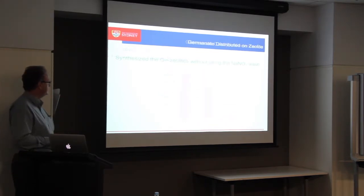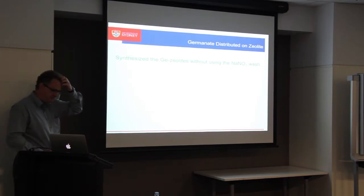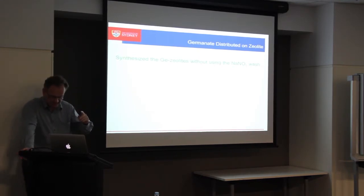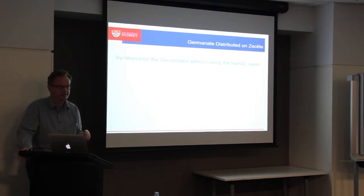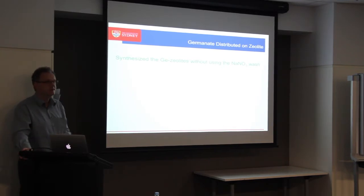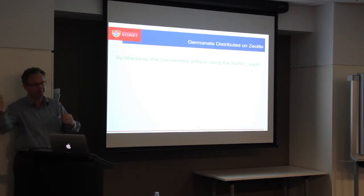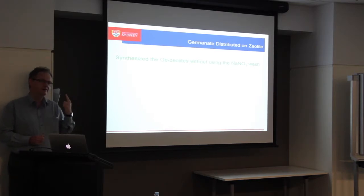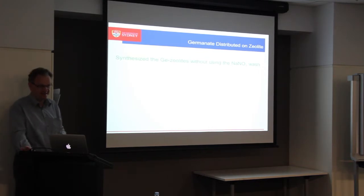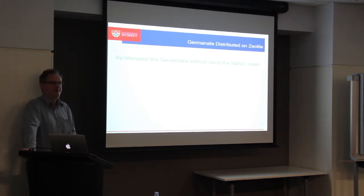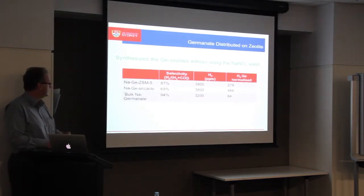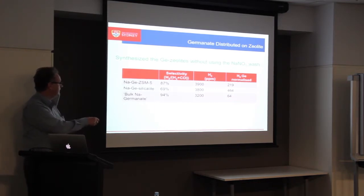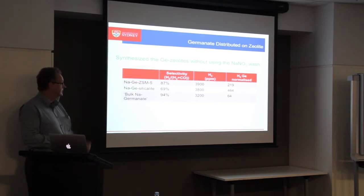And if you remember — this is even more important for students — the ZSM-5 we made and then the germanium-substituted one had some germanium impurity. We said we would remove it because that's what we needed to do. Then we got this lack of selectivity. But now with hindsight, maybe we removed the thing that was actually doing the job. So we made it all again and didn't remove it. And indeed, now I get much higher selectivity towards dehydrogenation than dehydration.